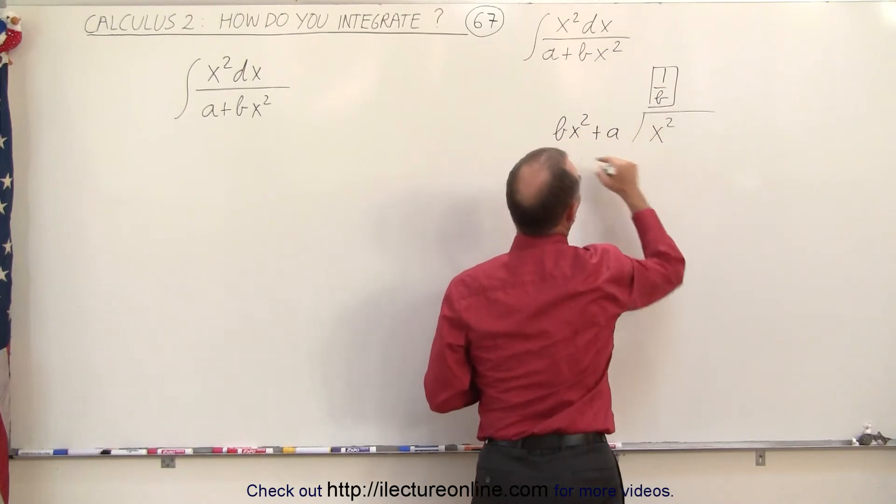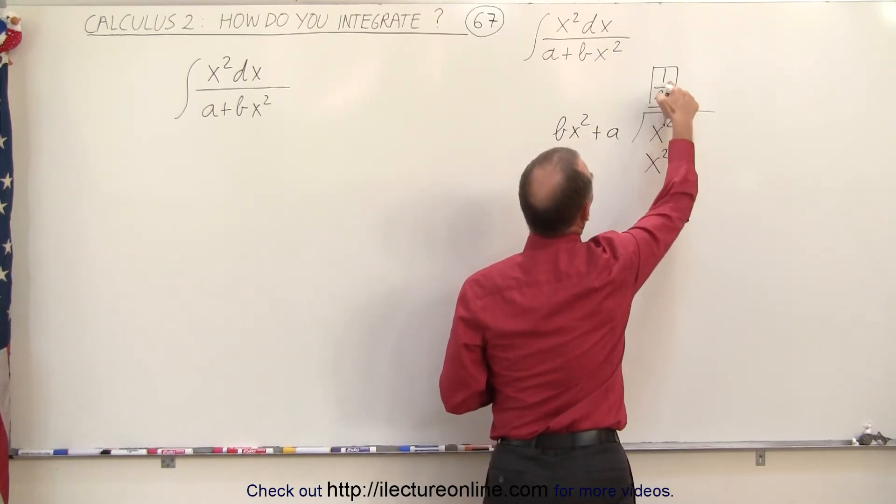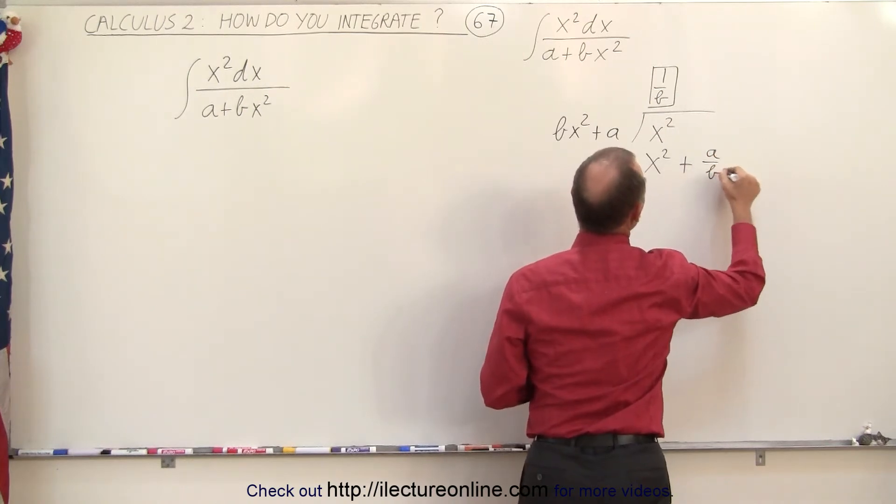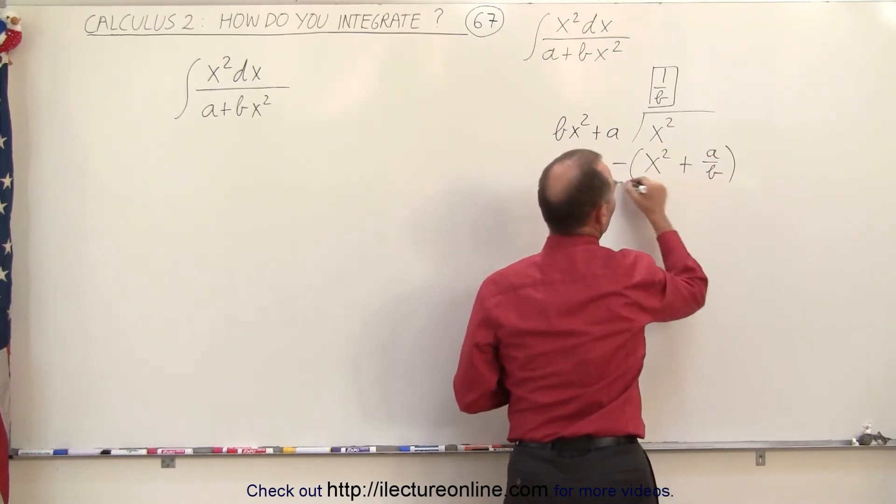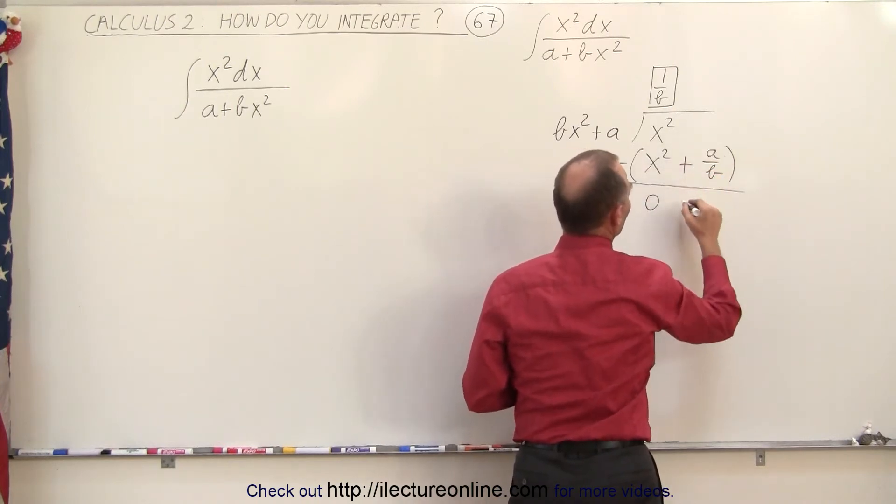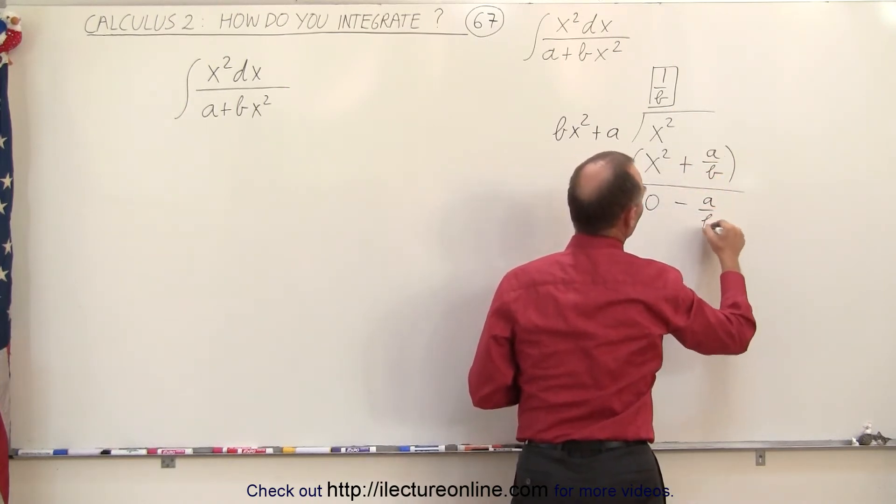So 1 over b times bx squared gives me x squared and 1 over b times a gives me plus a over b. When I subtract this, I end up with this minus this gives me 0 and 0 minus this gives me minus a over b.